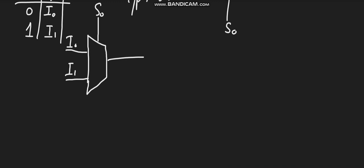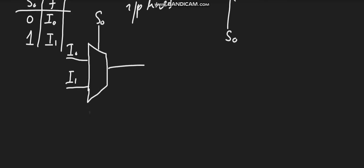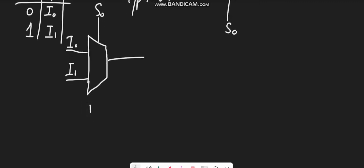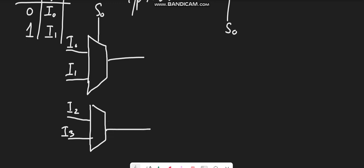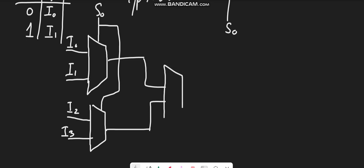Now let's see how we can design a 4-to-1 line multiplexer by using two 2-to-1 line multiplexers. This is the first MUX; similarly I can draw the second multiplexer, which will have two other input lines i2 and i3, and it will produce a single output line. The select line can also be connected with the second MUX. Then the outputs of these two MUXes can be fed into another 2-to-1 line multiplexer connected with select line s0.